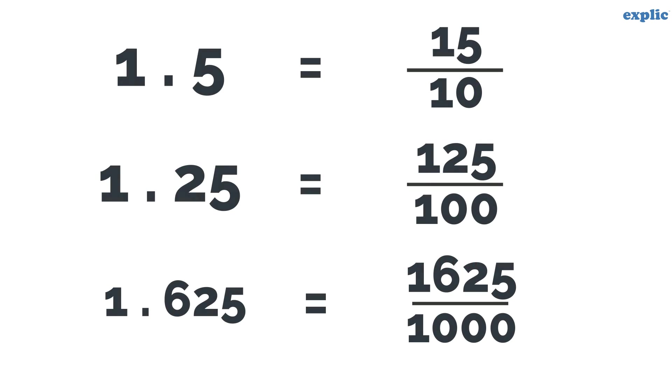The decimal number is a fraction where denominators are multiples of 10, such as 10, 100, 1000, 10000, and so on.